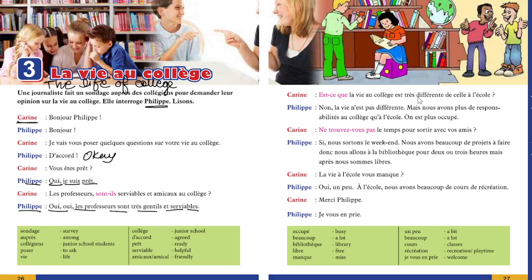Karine says, Est-ce que la vie au collège est très différente de celle à l'école? That means, is the life in college different from the life of school? Philippe says, Non, la vie n'est pas différente. Mais nous avons plus de responsabilités au collège qu'à l'école. On a plus occupé. That means, he said, No, the life is not different. But we have more responsibilities in college as compared to school. We are more busy.